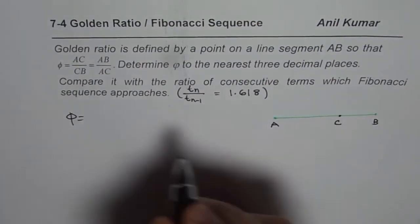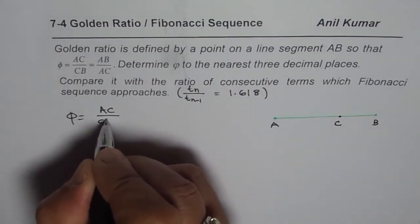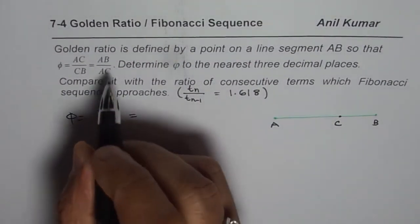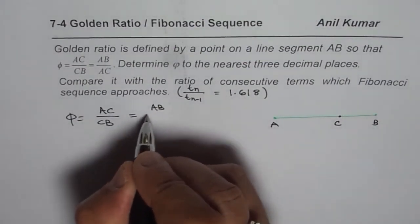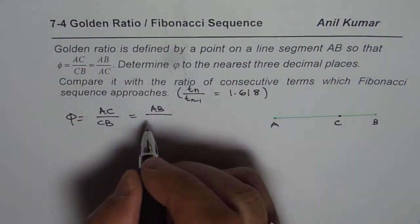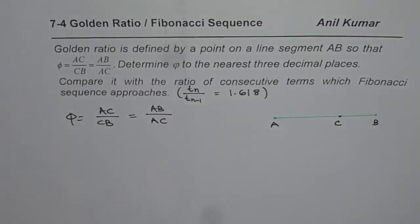So that phi is equal to AC divided by CB, which is equal to AB, AB is whole part, whole line AB divided by AC, the larger part, AC.